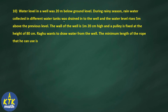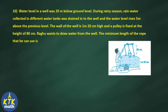Question number 10: water level in a well was 20 meters below ground level. During rainy season, rainwater raised the water level 5 meters above the previous level. The wall of the well is 1 meter 20 centimeters high and a pulley is fixed at a height of 80 centimeters. Ragu wants to draw water — find the minimum length of rope he can use. Check the diagram for clarity.